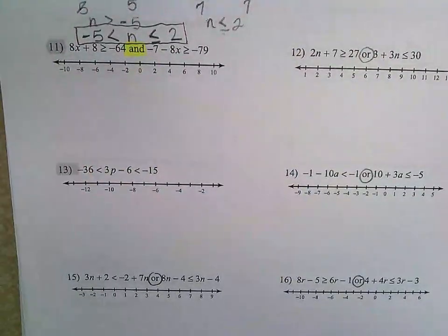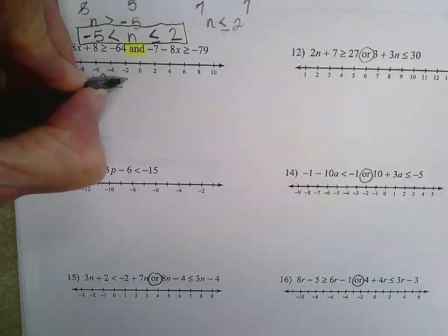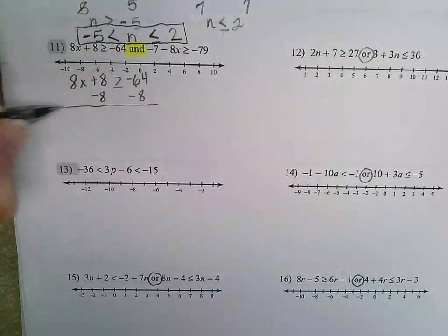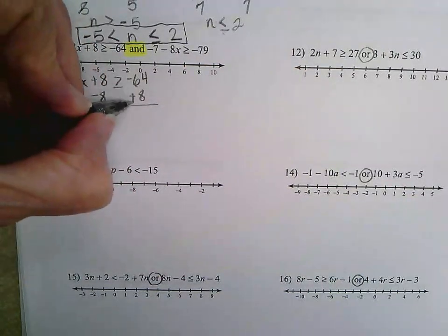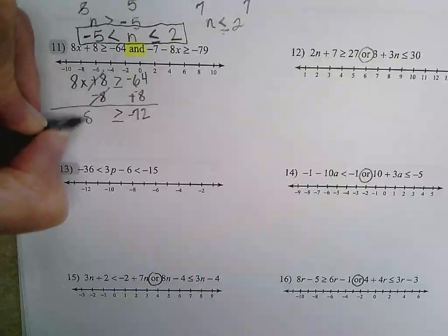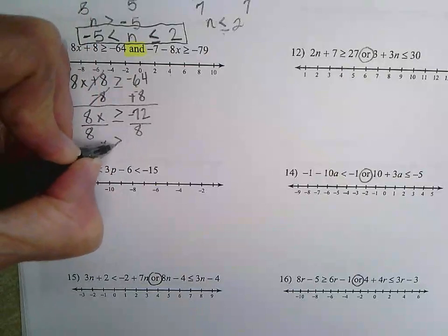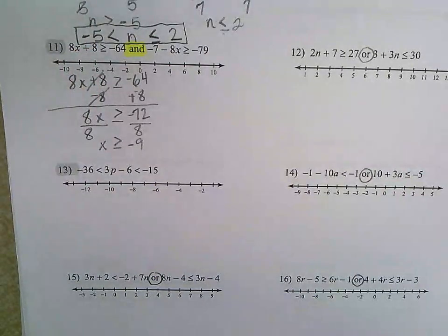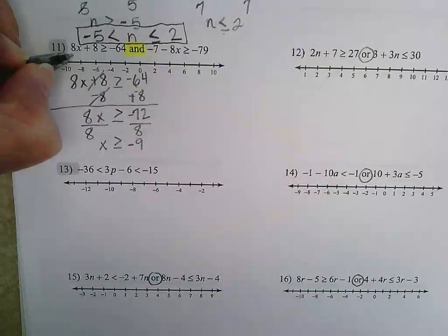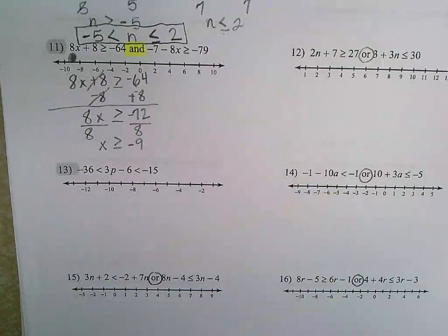Number eleven. Eight X plus eight is greater than or equal to negative 64. So I subtract eight from each side, and a positive eight plus a negative eight gives me negative 72. Dividing both sides by eight, X is greater than or equal to negative nine. I'm coming up to my number line and finding negative nine. It's not labeled, but approximately it would be right in between negative eight and negative ten, so I'm going to put my circle there.